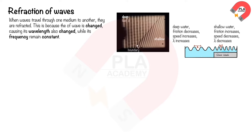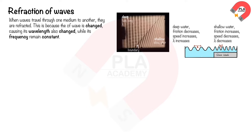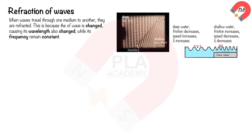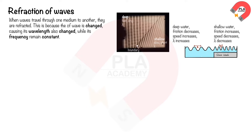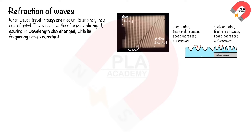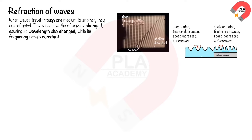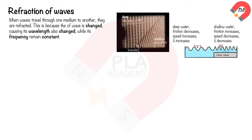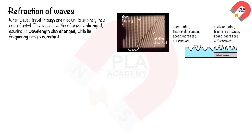When incident wavefronts travel from deep water to shallow water, the wave speed decreases, causing the wavefronts to bend toward the normal line and become closer together. This causes the wavelength to decrease.